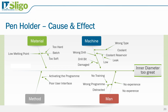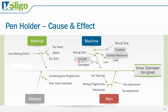Let's take the example of the pen holder and the cause and effect diagram associated with that. We may find that the inner diameter is too great and we may be interested in identifying how we can resolve this problem. We will have developed this cause and effect diagram, and may then identify other factors which require further analysis or experimentation — such as the coolant, the coolant reservoir and the drill bit — to achieve the target inner diameter with little variability in our process.